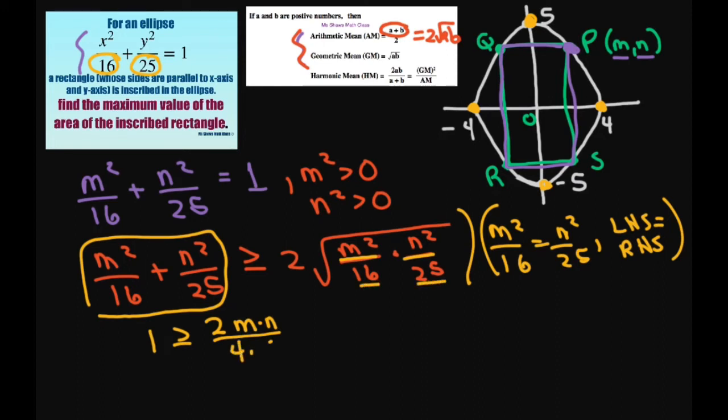that's going to be 4 times 5. So this is going to be 1 is greater than or equal to 1 tenth m n. Or you can say m n is less than or equal to 10.